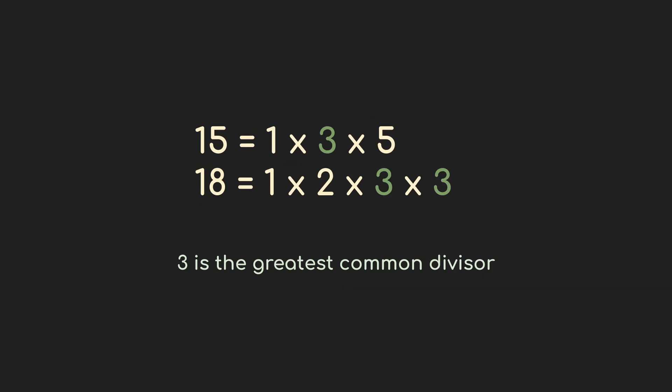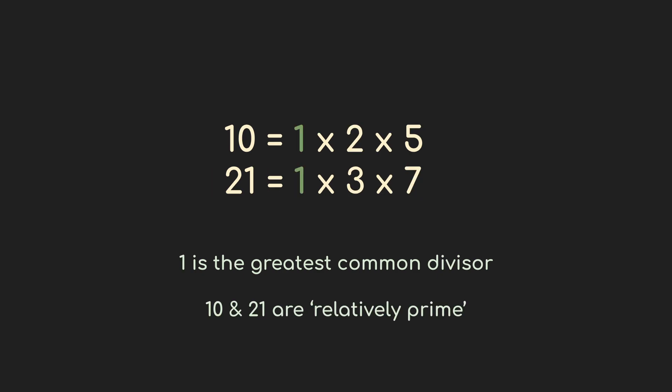Now we can talk about the common divisors that two numbers share. Let's say we've got fifteen and eighteen. Fifteen is one times three times five; eighteen is one times two times three times three. The largest and only divisor in common is three — two doesn't divide into fifteen equally, and five doesn't divide into eighteen equally. Only three works, and that's the greatest common divisor. An interesting case is when two numbers have no common divisors except one. Ten is divisible by two and five, and twenty-one is divisible by three and seven — there's no overlap. The only number that divides them both is one. We call that pair of numbers relatively prime, and we're going to come back to that soon.